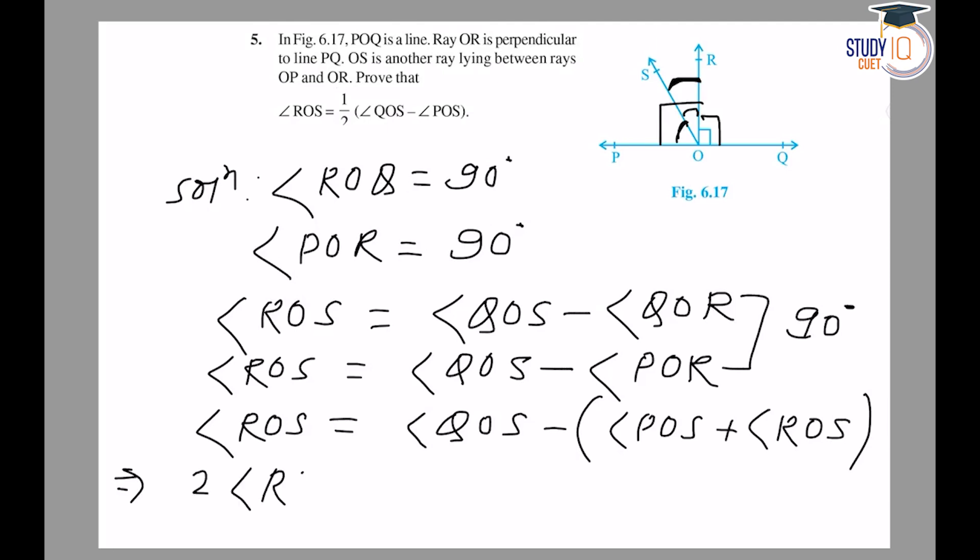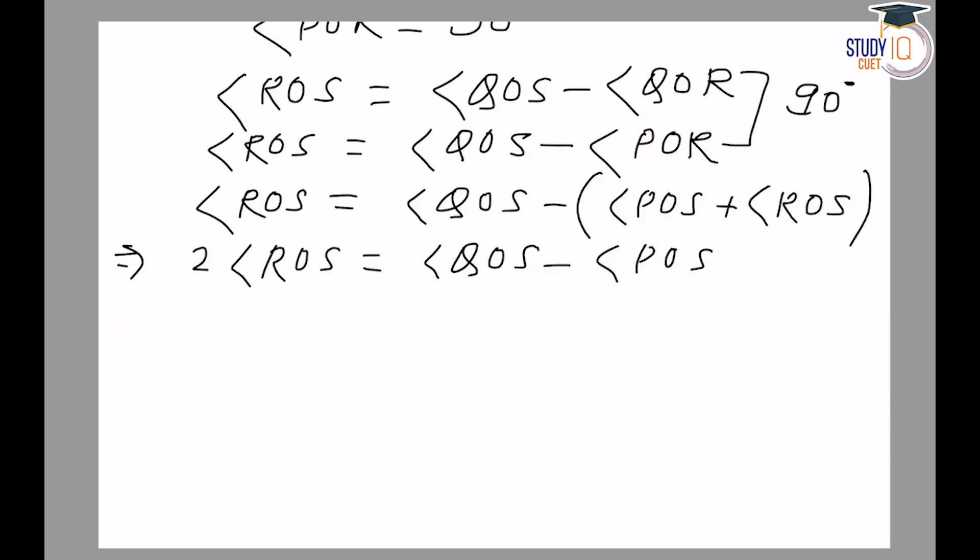From the figure, angle POS plus angle ROS equals angle QOS. So angle ROS equals angle QOS minus angle POS. Hence, angle ROS equals half of angle QOS minus angle POS.